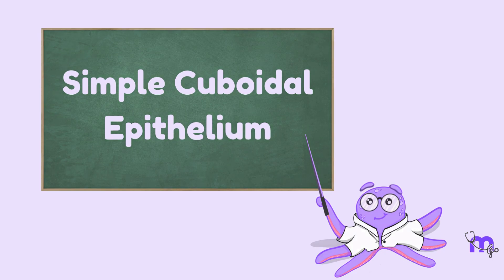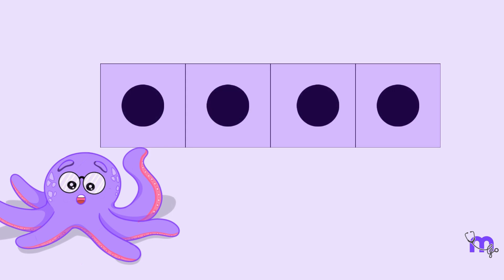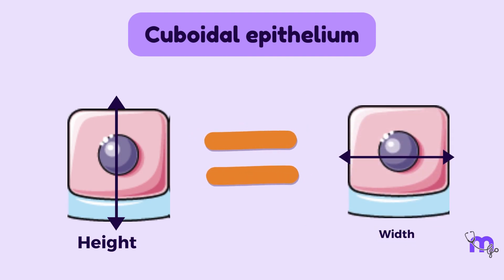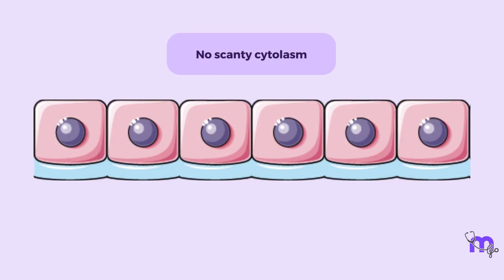Moving on, let's talk about the simple cuboidal epithelium. Think of this epithelium as a row of square boxes with a rounded ball inside each of them. As the name suggests, the cells of this epithelium are more cuboidal where their height and width are almost the same. Cytoplasm is not as scanty as in squamous epithelium and the nucleus is more rounded and centrally placed.